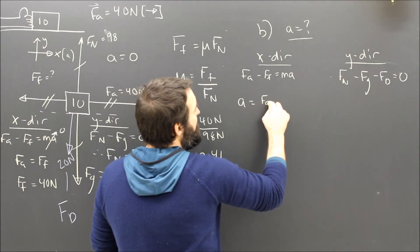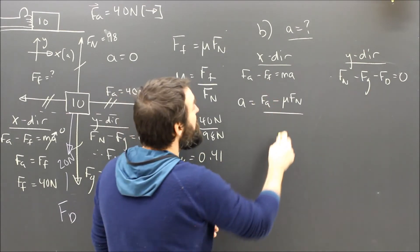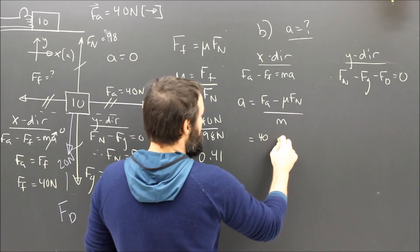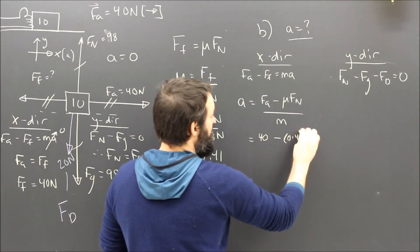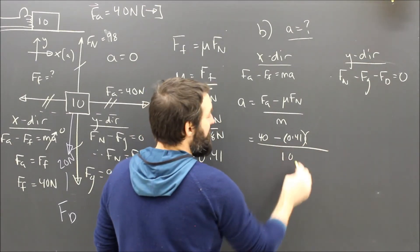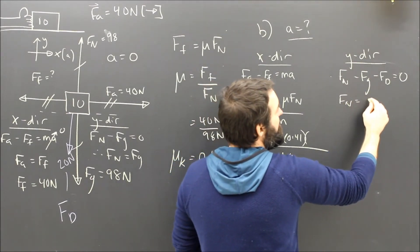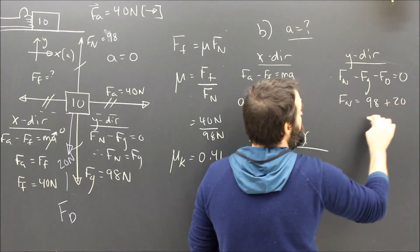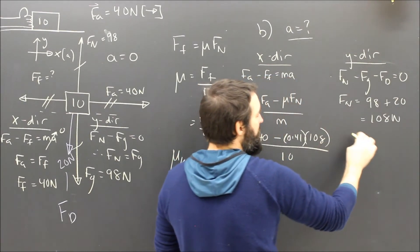So the acceleration is going to be FA minus FF, which is mu FN, over M. And I know that FA is 40. And I know that mu is 0.41. But I don't know FN. I know the mass is 10. So I've got to go back to my Y equation and find FN. FN is equal to FG plus FD. And that's 108 newtons. So I'll put that in here, 108 newtons.